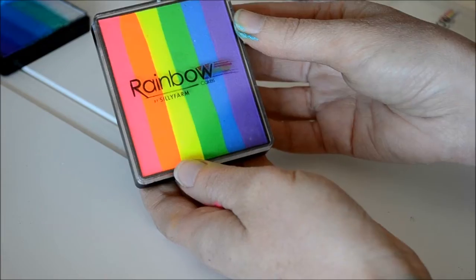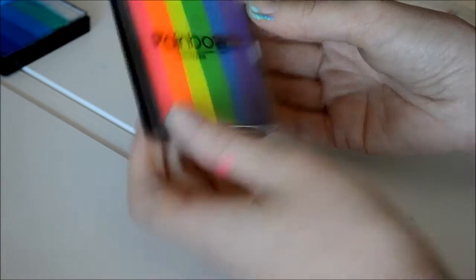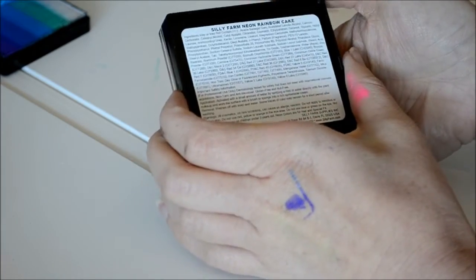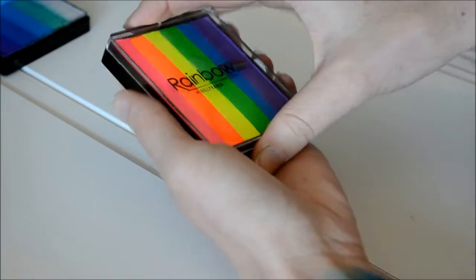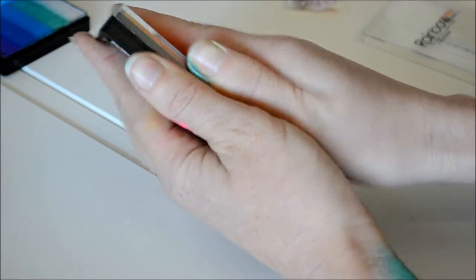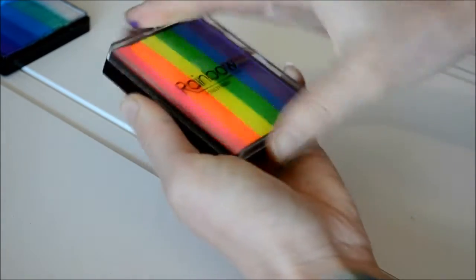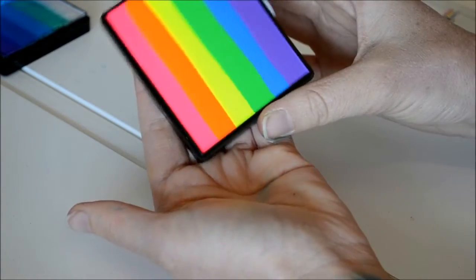The third color I got was the Neon Rainbow cake, so it's called the Silly Farm Neon Rainbow Cake, and that's what it looks like. It's got a lot of colors in it, but this one is one of my most popular in my kit and the kids always go for this one.